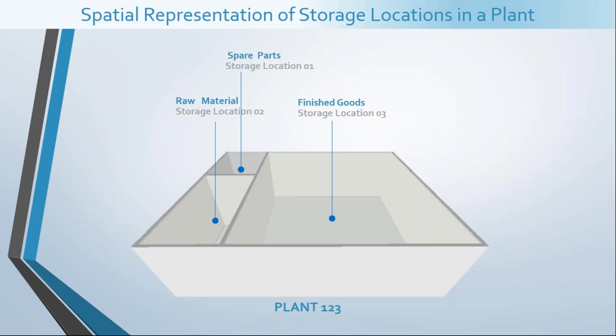To start with, let's try to understand the situation of a hypothetical plant — let's call it Plant 123. This plant deals with three different types of materials. It stores the products it manufactures in the finished goods section. It also manages an inventory of raw materials and maintains a small inventory of spare parts to service products already sold to customers. From an inventory management perspective, these three material types are maintained in three separate storage locations: storage location one, two, and three for spare parts, raw material, and finished goods respectively.